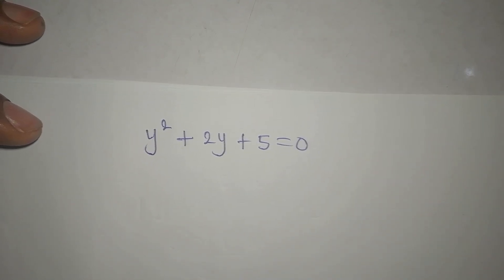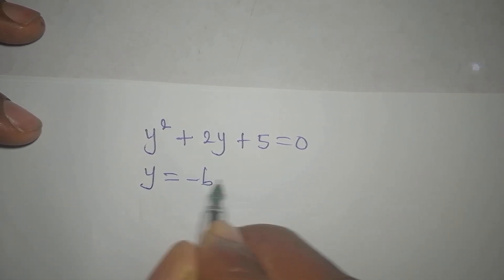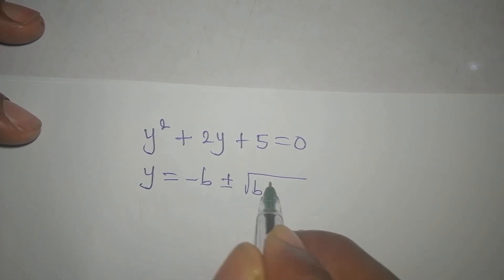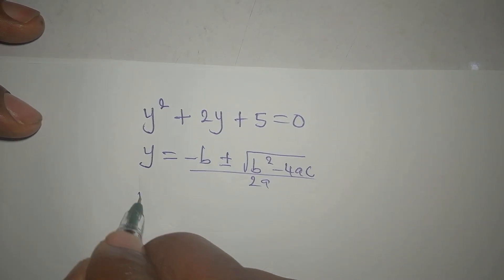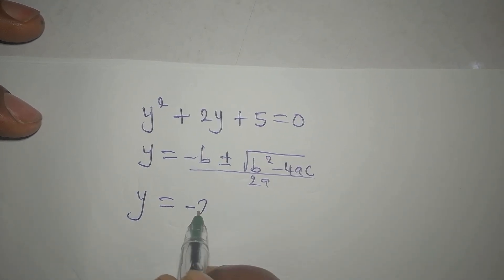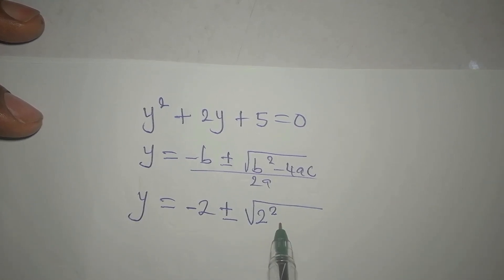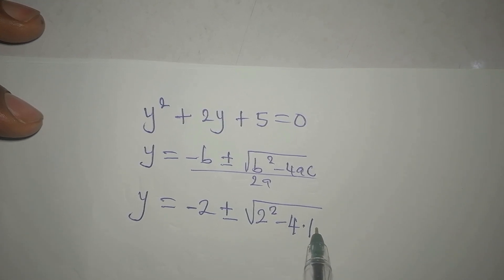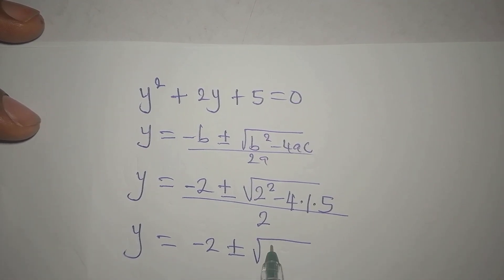For the quadratic equation Y² plus 2Y plus 5 equals zero, we use the quadratic formula: Y equals negative b plus or minus square root of b² minus 4ac, all over 2a. Here a equals 1, b equals 2, c equals 5. So Y equals negative 2 plus or minus square root of 4 minus 20, divided by 2.